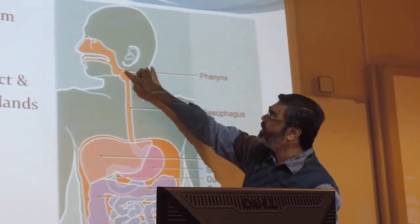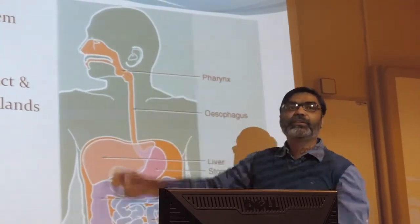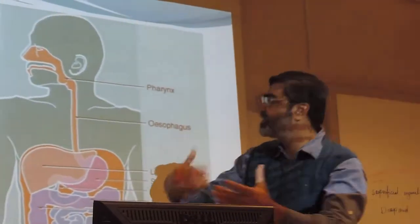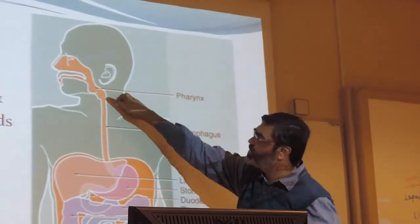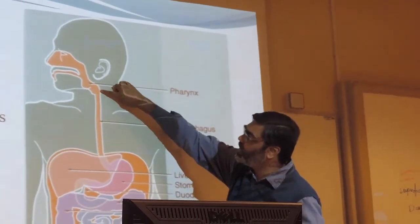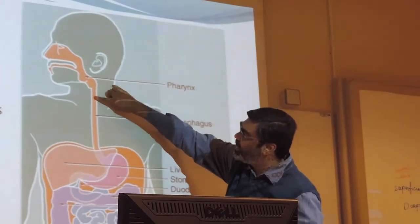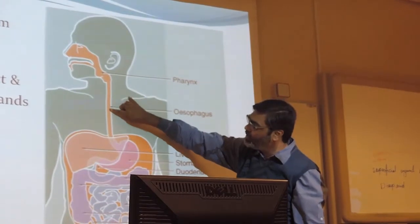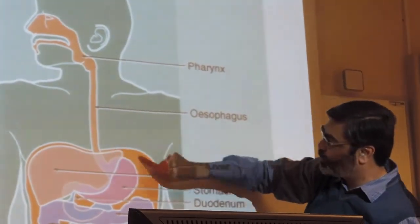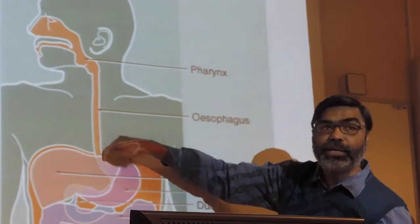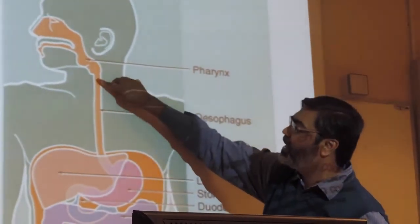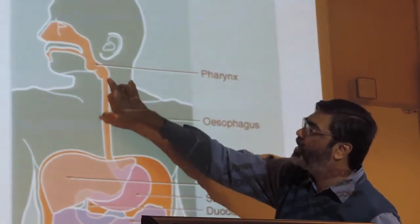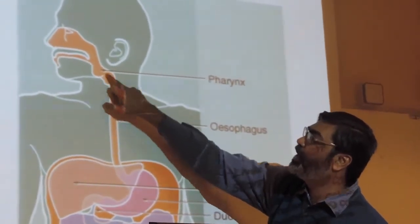The pharynx and esophagus almost have the same structure. The esophagus starts here in the neck and goes down, enters into the thorax, passes all the way through the thorax, then enters the abdomen and continues with the stomach. So the esophagus is a big structure present in the neck and thorax, up to the junction of the pharynx.